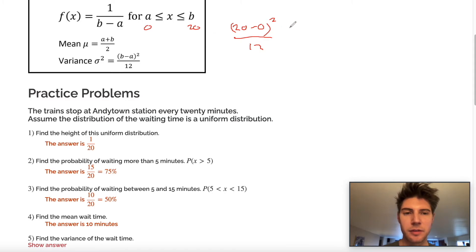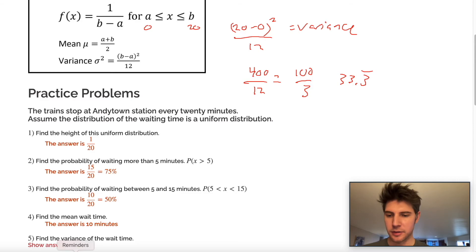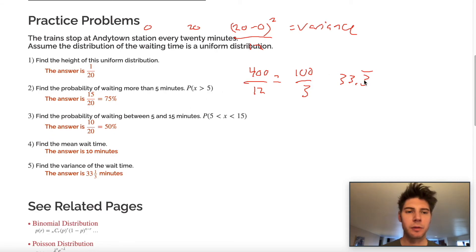Well, 20 minus 0 is just 20 and 20 squared is 400. So it's 400 over 12, which reduces into 100 over 3, which is 33 bar 3. And we can check that answer at 33 and one third, which is the same thing. So I hope this makes sense.